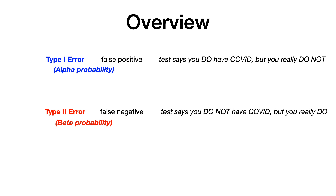Likewise for type 2 error, it is a false negative having to do with the incorrect use of the null hypothesis, but you also might see it written as the beta probability. Keep those terms in mind: type 1 equals alpha, type 2 equals beta. That's easy to remember because alpha comes before beta in the Greek alphabet — they're the first and second letters.